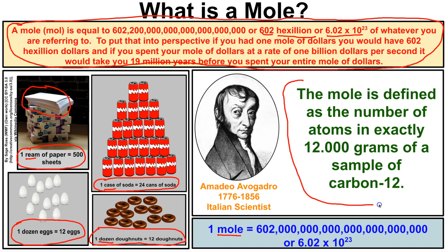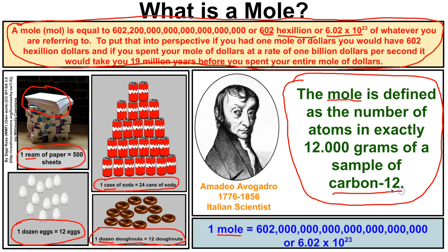So what exactly is a mole? The mole is defined as the number of atoms in exactly 12 grams of a sample of carbon-12. If you have 12 grams of carbon-12 — one isotope of carbon — you will have exactly one mole of carbon-12, and in that one mole there will be 602 hexillion, or 6.02 times 10 to the 23rd, atoms of carbon-12.